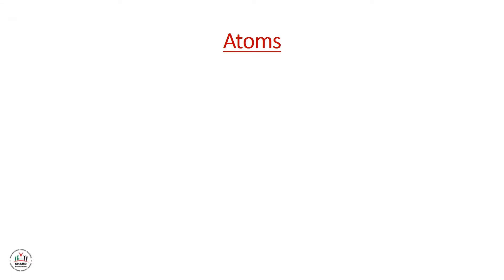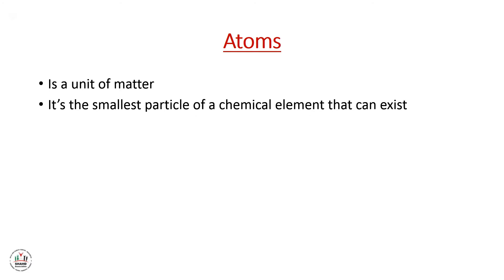As we saw in the Explore section, everything around us is composed of small particles that are called atoms. Today we will talk about different types of matter. The first one is called the atom. The atom is a unit of matter — it is the smallest particle of a chemical element that can exist.